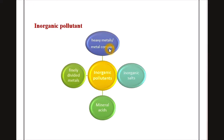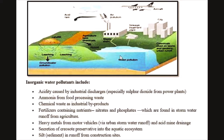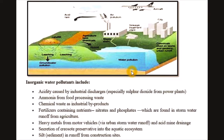These are the various sources through which these substances enter natural water bodies. The acidity of water mostly increases due to industrial discharge of waste. Similarly, chemical waste and agricultural waste increases the percentage of nitrate and phosphate found in stormwater. The major sources of heavy metals are industries, motor vehicles, and acid mine drainage.